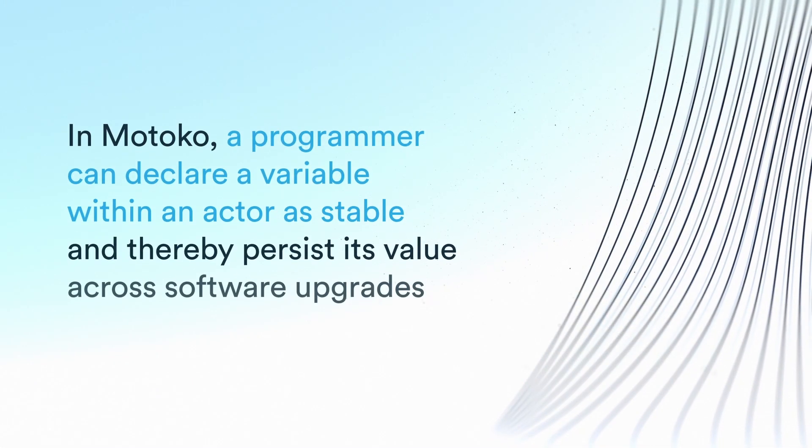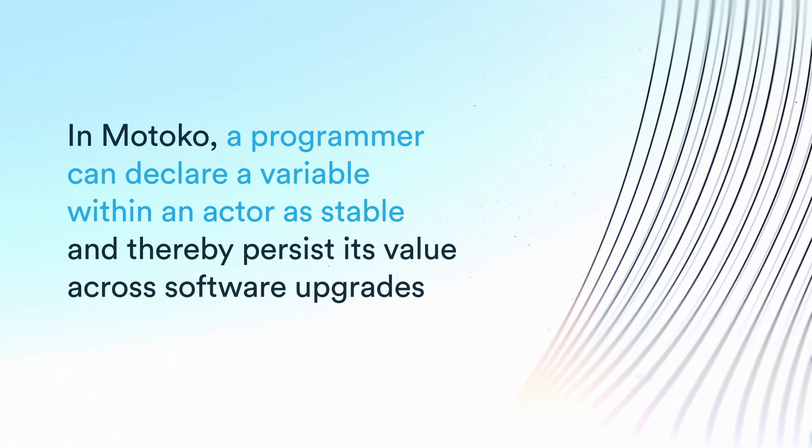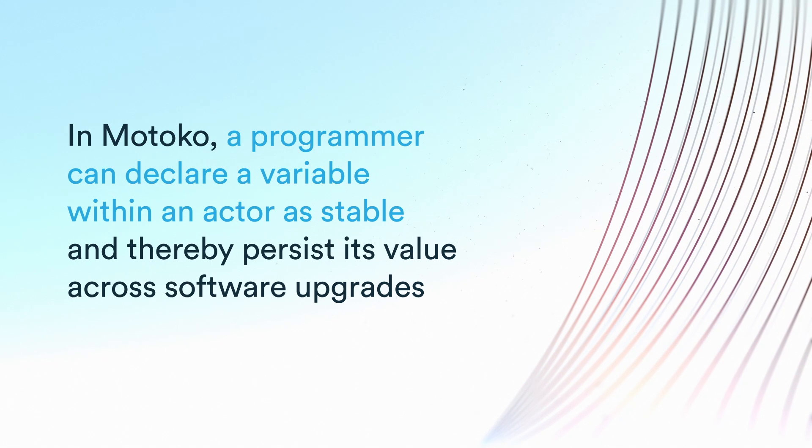You have a running application, but now you need to fix a bug or extend the functionality — you actually need to load new code. In the latest version of Motoko that we're releasing now, we're supporting that through a notion we call stable variables. The programmer can declare a certain set of variables in an actor as stable, committing to these variables not changing their types in incompatible ways in the future. When writing a new version of a canister, existing stable variables cannot change in an incompatible way. Because of that, the upgraded canister can safely inherit the old values, and the runtime system ensures the representation remains compatible, even across different compiler versions.